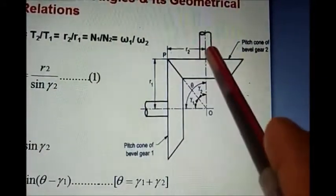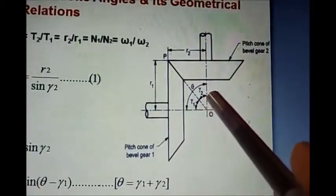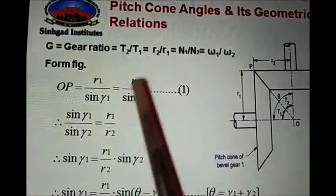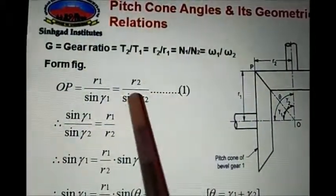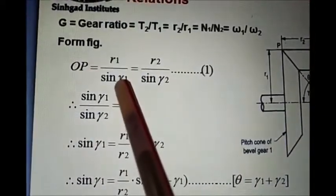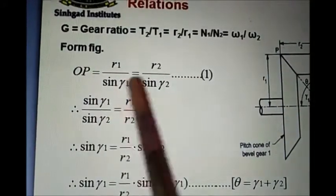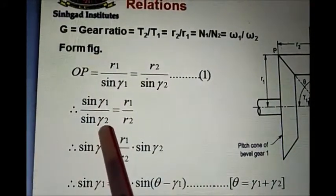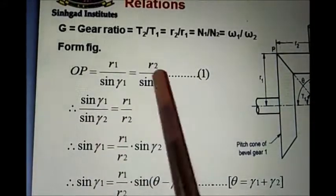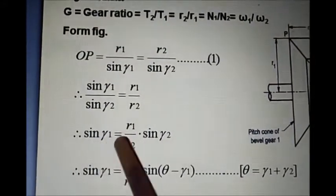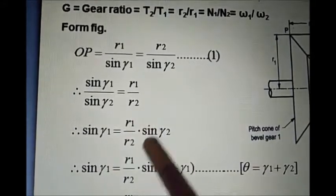Similarly, for OP using R2 and gamma 2, we get OP equals R2 divided by sine of gamma 2. Rearranging, sine of gamma 1 over sine of gamma 2 equals R1 over R2, so sine of gamma 1 equals (R1 over R2) times sine of gamma 2.